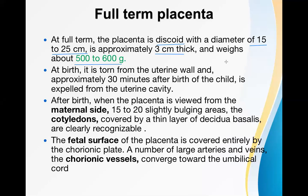After the baby is born, the placenta separates from the uterine wall due to constant uterine contractions and is expelled approximately 30 minutes after birth. Until the placenta is delivered, the delivery is not complete. This delivery of the placenta is called the third stage of labor. Remember: the third stage of labor is all about placental delivery or placental expulsion.